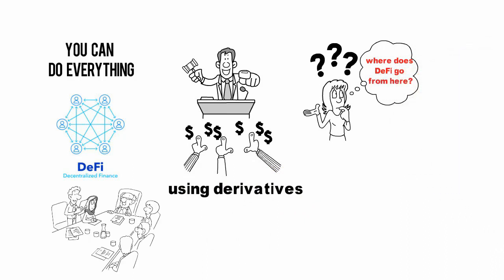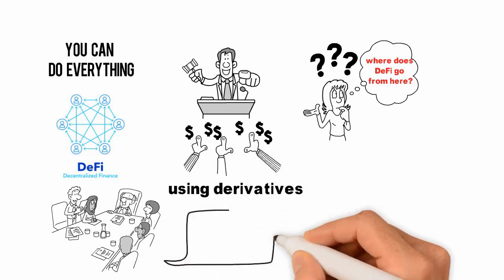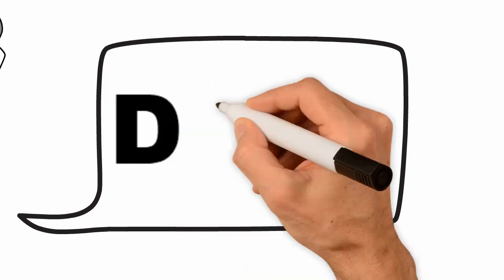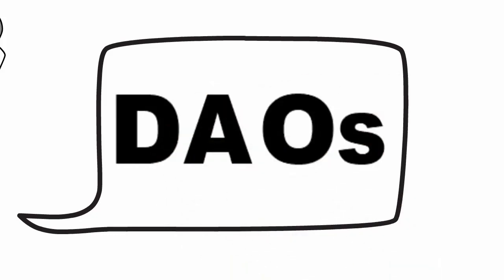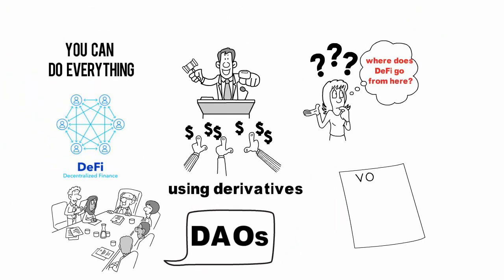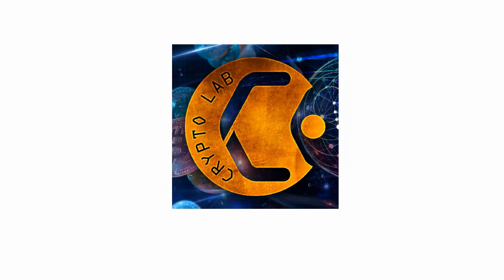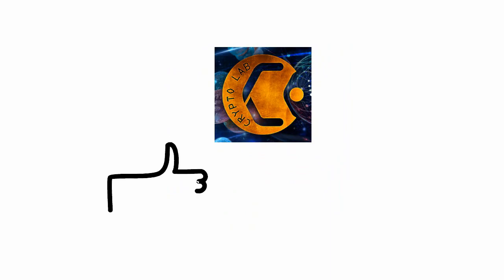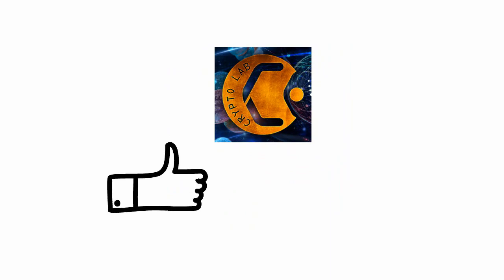So where does DeFi go from here? Systems that allow borrowers to access DeFi tools — similar to credit scores but maintaining privacy — are on the horizon. There are also prospects of blockchain-based decentralized autonomous organizations, known as DAOs, which can be set up to run DeFi apps governed entirely through stakeholder votes. The future definitely looks bright.